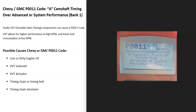Today I'm talking about a Chevy or GMC with the P0011 code — what it is and how you go about fixing it. The P0011 code is an A camshaft timing over-advanced or system performance, bank one.